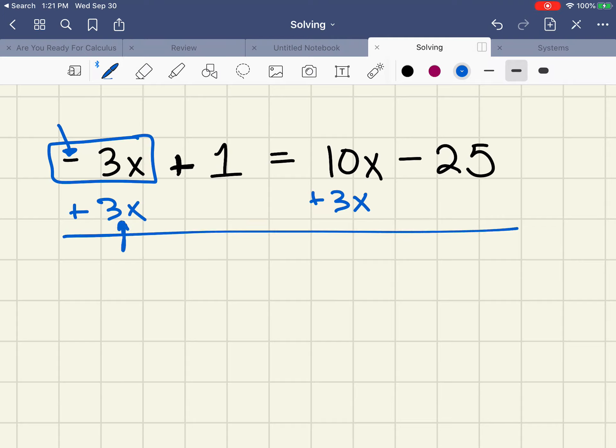When I add 3x to negative 3x, they cancel. I'll use a highlighter so that you can see the number still. The positive 1 stays positive, so it's now 1. Drop the equal sign down. 10x plus 3x is 13x minus 25.